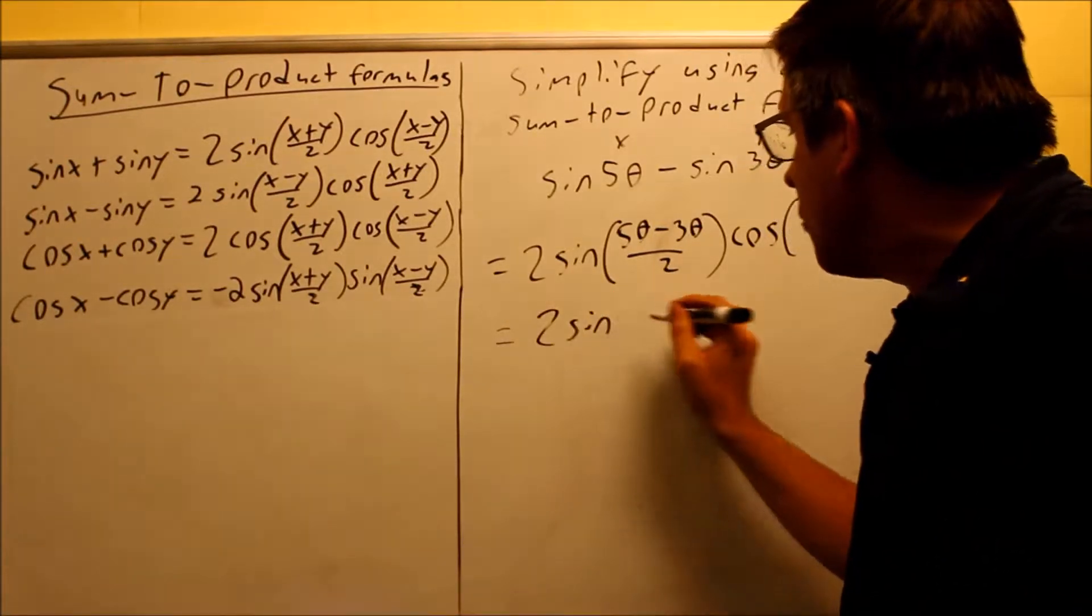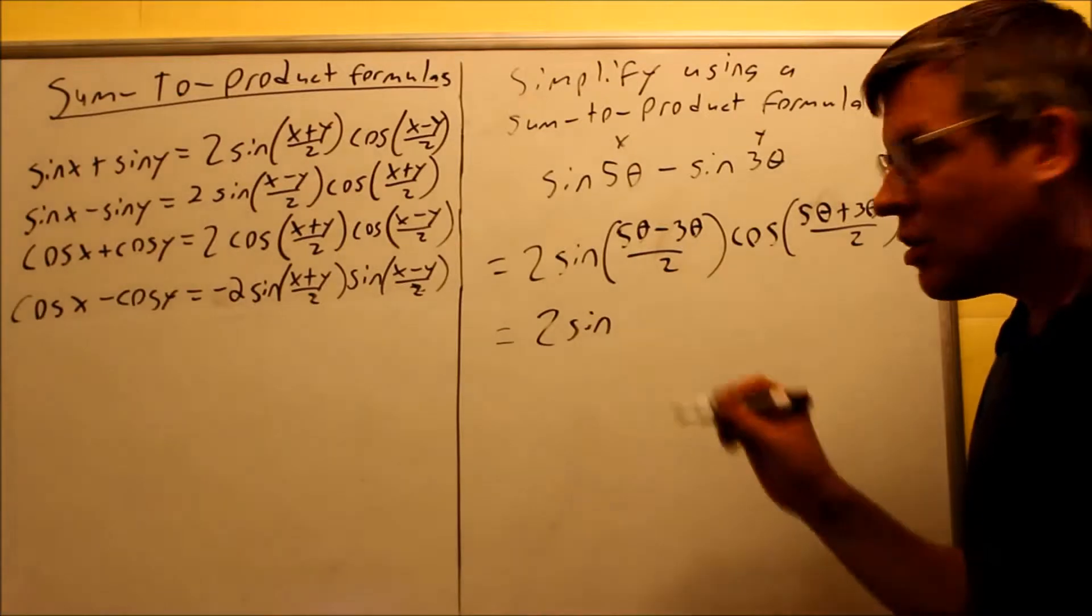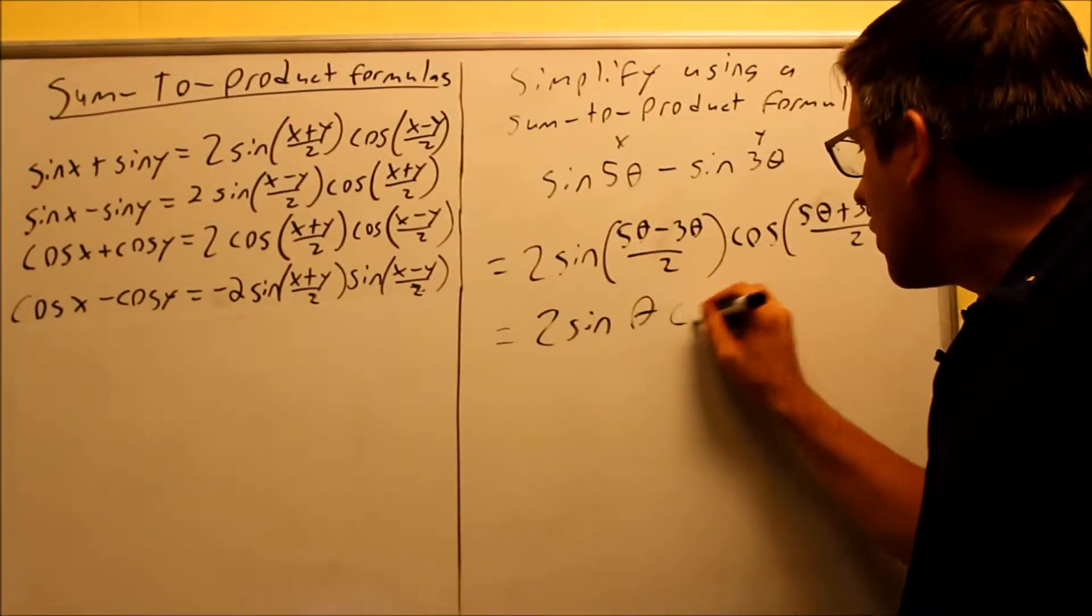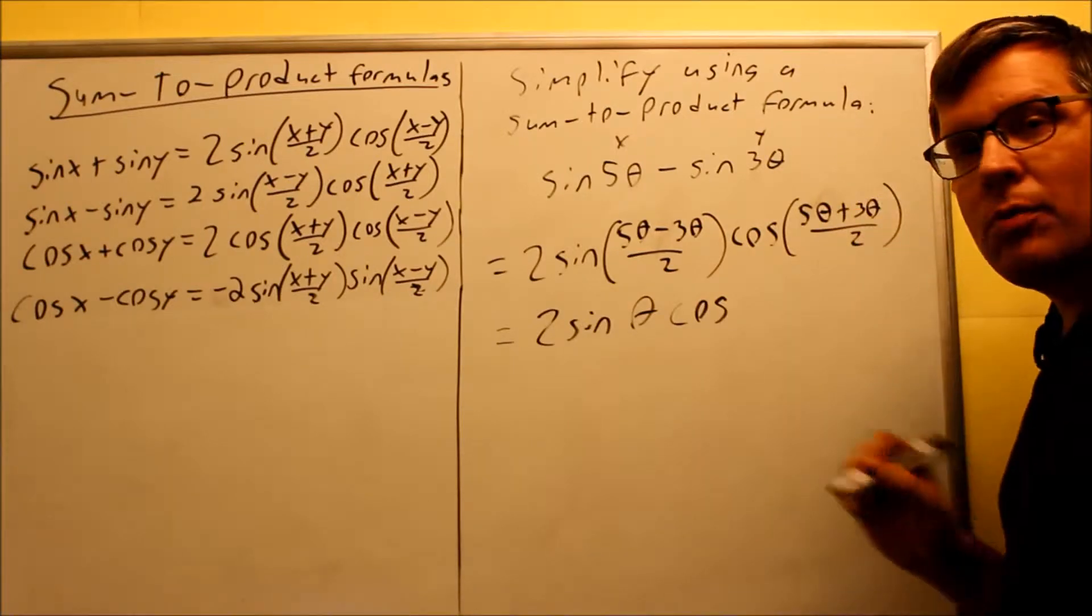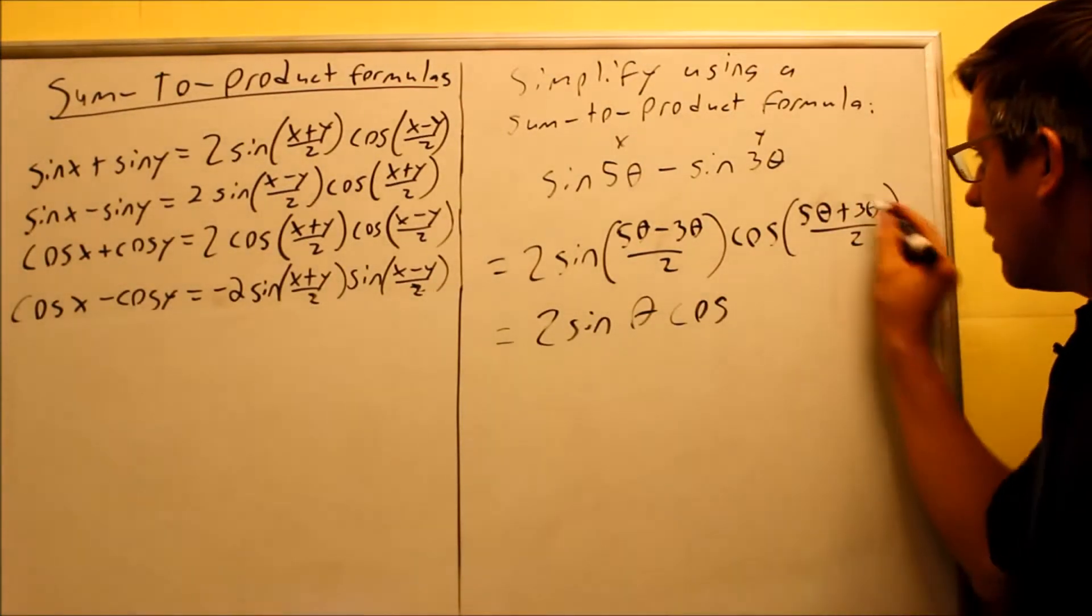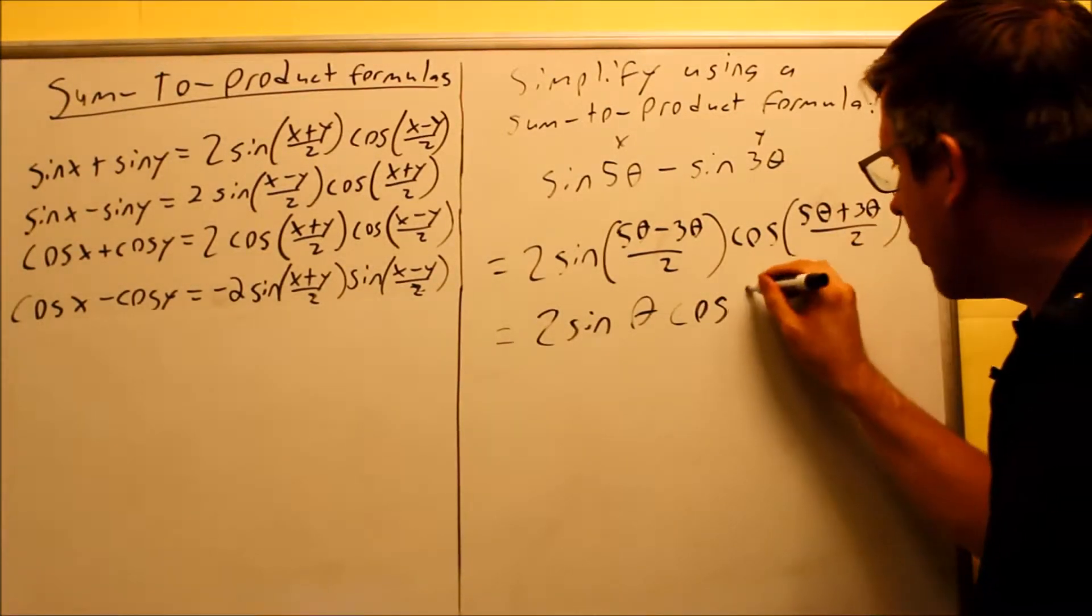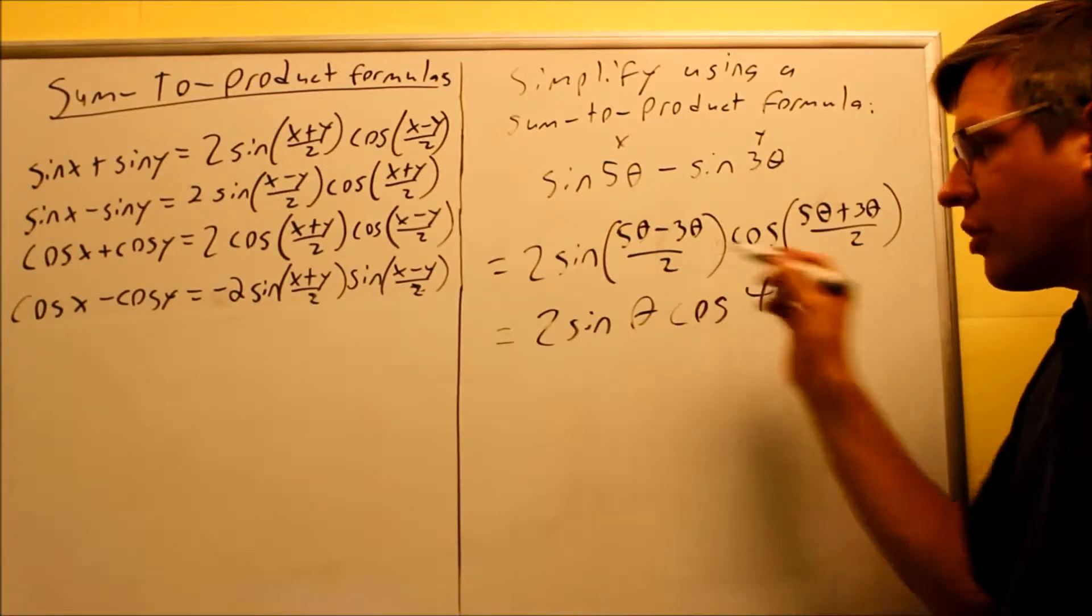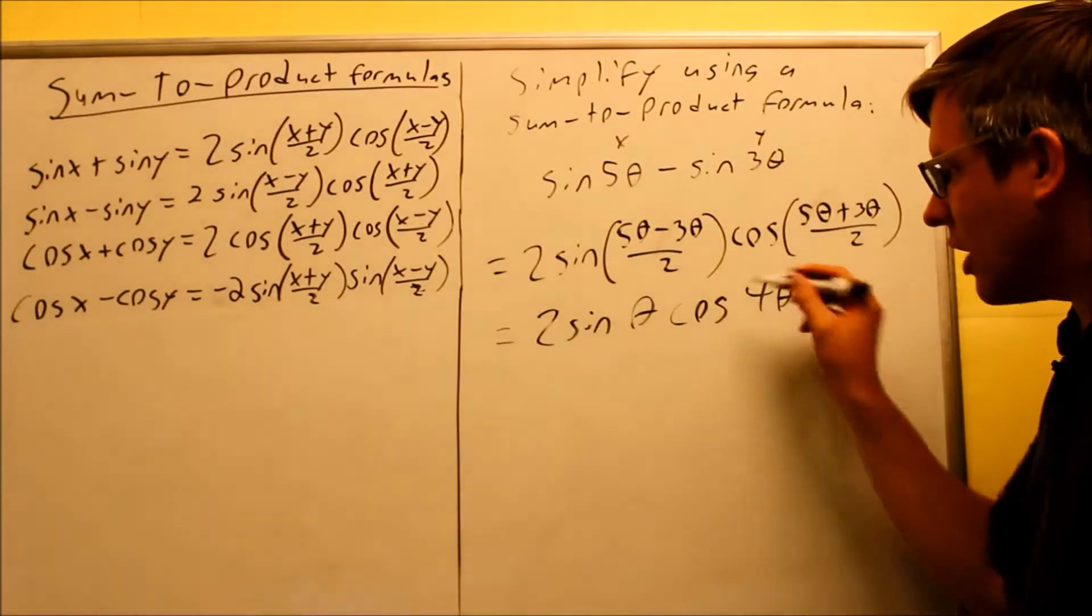We get 2 sine, 5 theta minus 3 theta, that's 2 theta. 2 theta over 2 is just theta. And then this one, cosine, we have 5 theta plus 3 theta, that's 8 theta. 8 theta over 2 is 4 theta. So now we get this sine theta, cosine 4 theta, nothing more we can do there for simplifying, so that's as far as we can go.